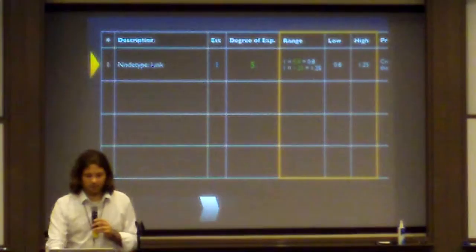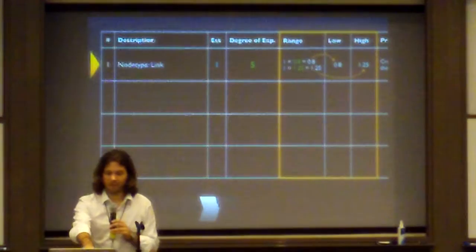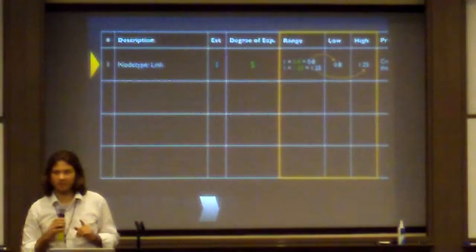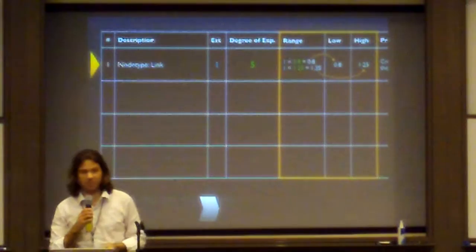It's really simple, it's just basic math. Basically, we just multiply the ideal estimate with the lowest and the highest. So a note-type link, which we estimate to take one ideal hour at a degree of experience of 5, because we've done this a thousand times before, would take somewhere between 0.8 to 1.25 hours.